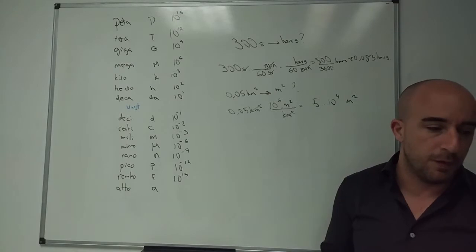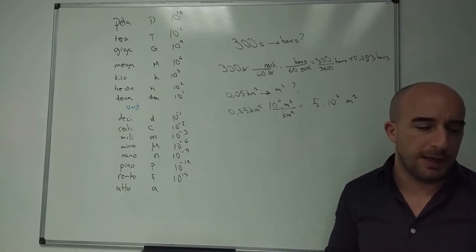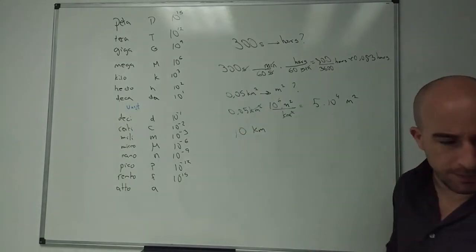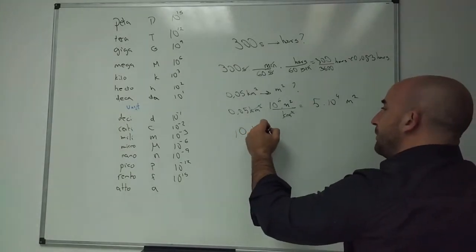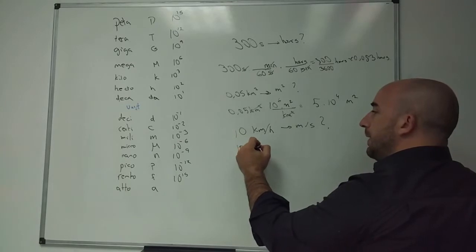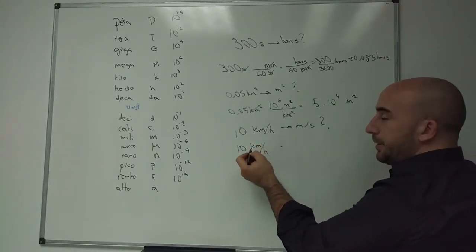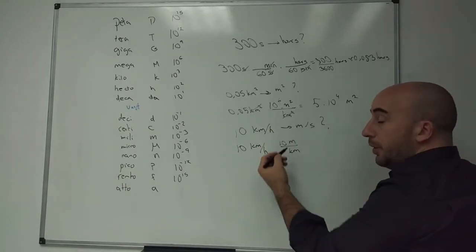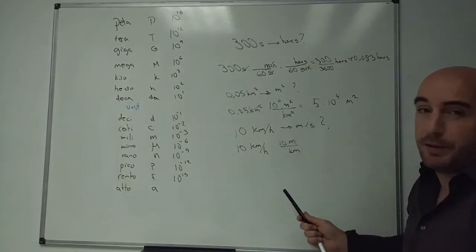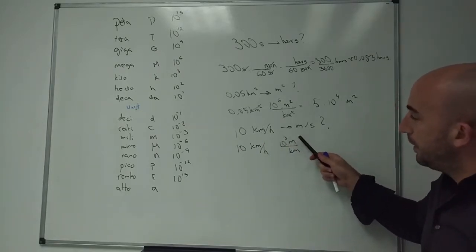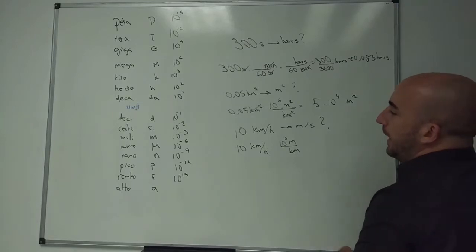So we'll do a compound one so that you can see it. Let's do 10 kilometers per hour to meters per second. So we put the unit. Let's change. First, let's do kilometers. So we want to remove the kilometers and put meters and we already know that there's 10. And that's the good thing about this method. You know, if you have to multiply the value, then there's 10 to the power of 3 meters in one kilometer. 10 to the power of 3 meters per kilometer.